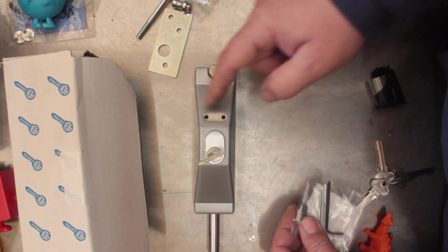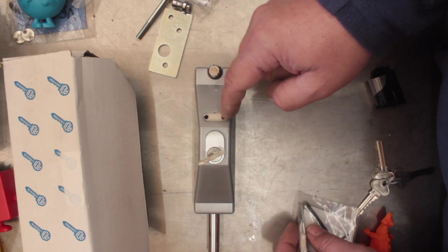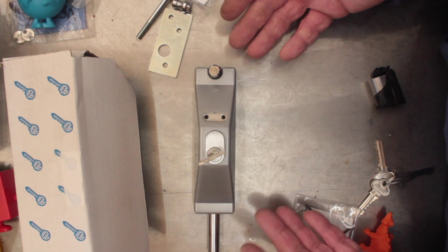You need to pop that out. That will allow you access to the two allen key screws which are right here, which go straight through the lock body and onto the backing plate. Remove them, then you'll be looking at what we're looking at now.